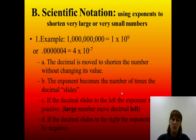So letter A, the decimals move to shorten the number without changing the value. It's just a different way of writing the exact same number. Letter B, the exponent becomes the number of times the decimal slides. How many spots did you move the decimal? That's the little exponent up there, the superscript. Letter C, if the decimal slides to the left, the exponent will be positive. So remember, if it's a large number, you move it left. Large left, large left. And letter D, if the decimal slides to the right, the exponent will be negative.